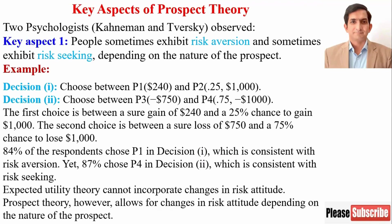I will now explain the key aspects of prospect theory. The first one is that people sometimes behave like risk-averse and sometimes they behave like a risk-seeker. It depends upon the nature of the prospect. If there is a gain, people behave like risk-averse, and if there is a loss prospect, people behave like a risk-seeker. Let me give you an example.